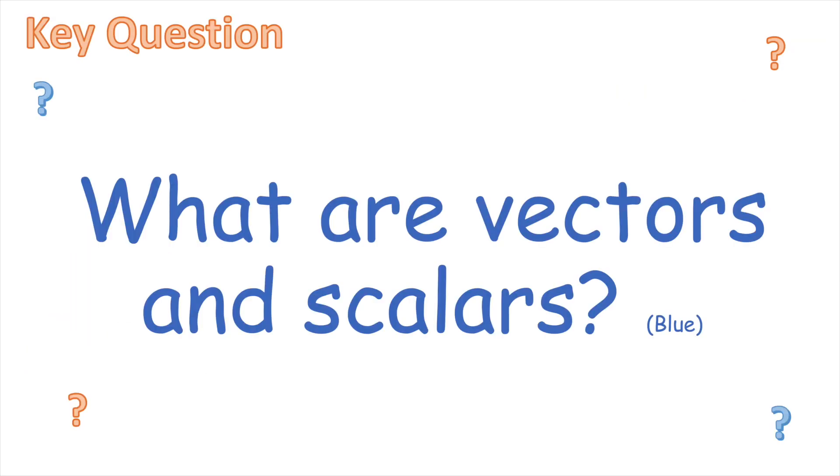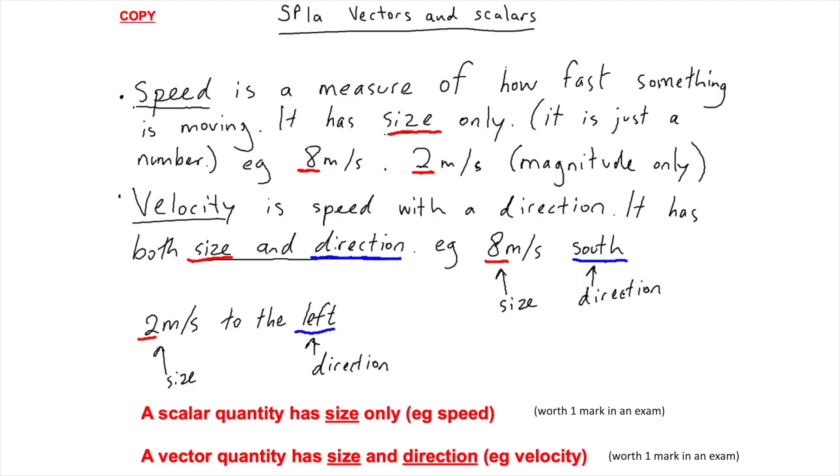So what are vectors and scalars? A scalar quantity has size only, as it says down the bottom here. Speed has size only, so it's just a number, so that is a scalar.